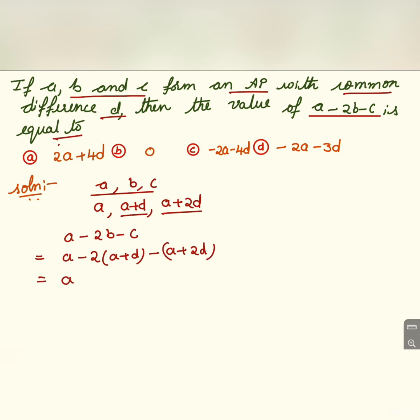Now if it is further simplified, minus 2 into A is 2A and minus 2 into D is 2D minus A minus 2D.